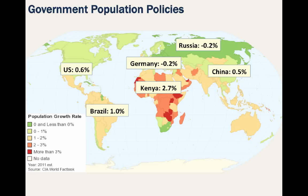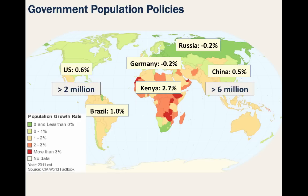Let's dig into the numbers even deeper. China and the United States have nearly identical growth rates. However, at this pace, China will increase its population by more than 6 million every single year, whereas the United States, with a smaller population, will increase by less than 2 million.